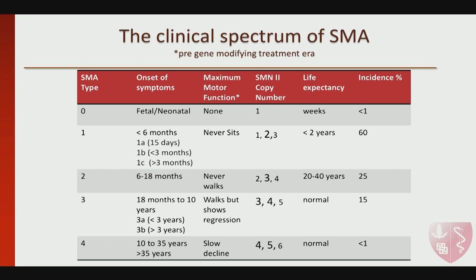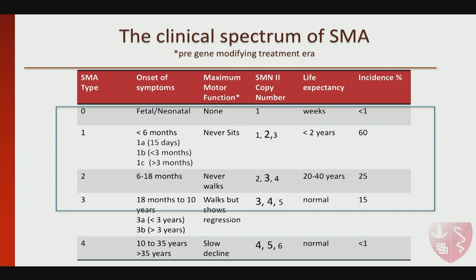This is the clinical spectrum of SMA. We're going to focus our talk mostly on infants — defined as less than two years of age — so that includes classic types zero, one, two, and three, as they can all present within that range. Now that we're going to have neonatal screening, most likely all of them are going to present within that age range that I'm going to talk to you about.